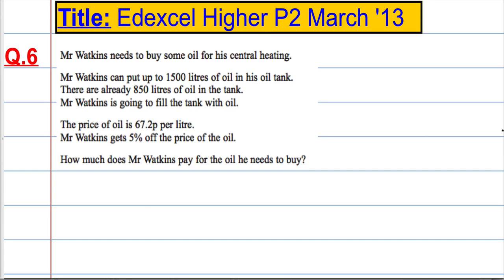In question 6, Mr Watkins needs to buy some oil for his central heating. He can put up to 1500 litres of oil in his oil tank. There are already 850 litres of oil in the tank and he wants to fill the tank with oil. The price of oil is 67.2 pence per litre and he gets a 5% discount on the price of oil. How much does Mr Watkins pay for the oil he needs?